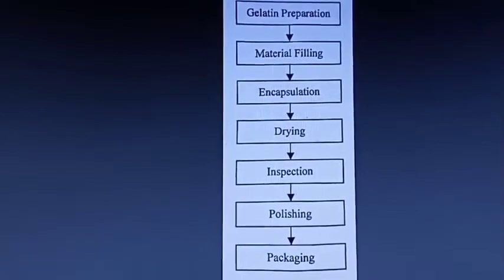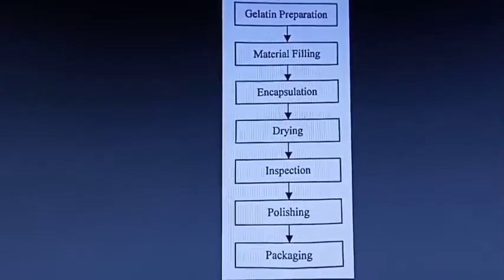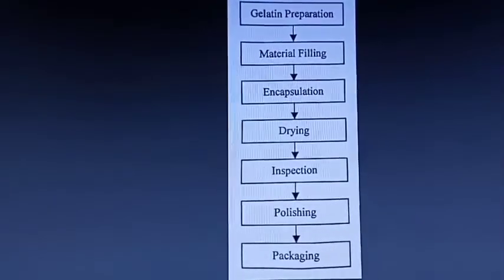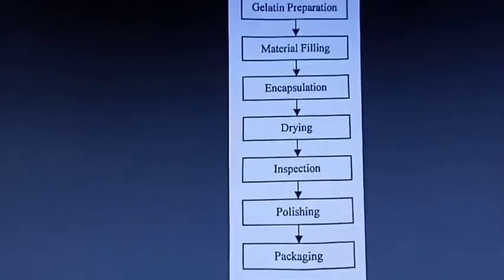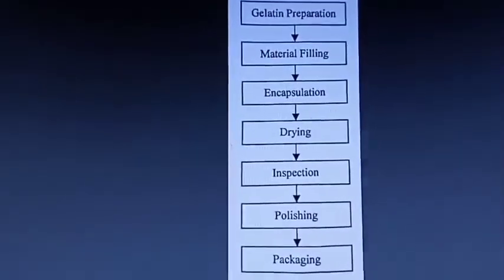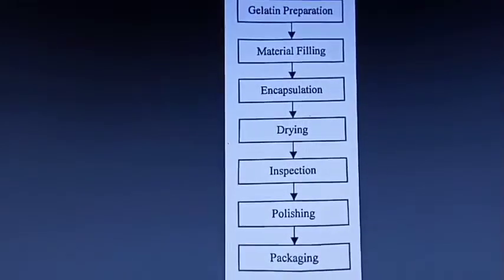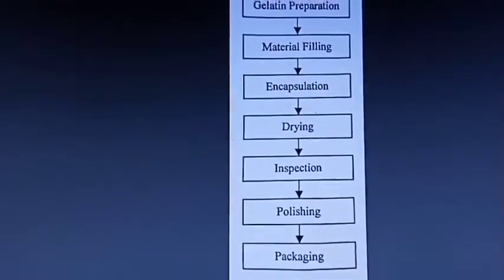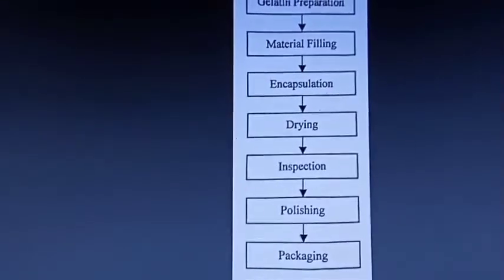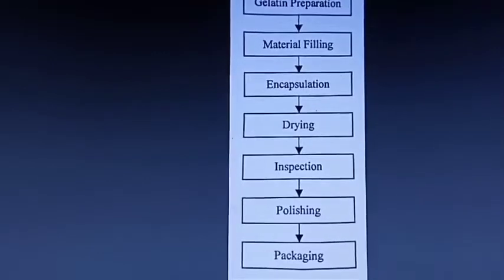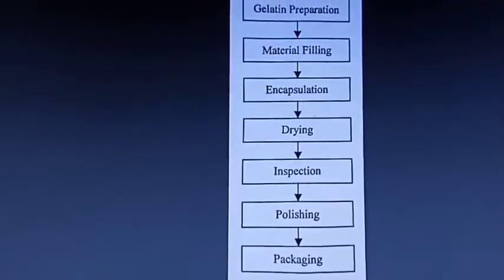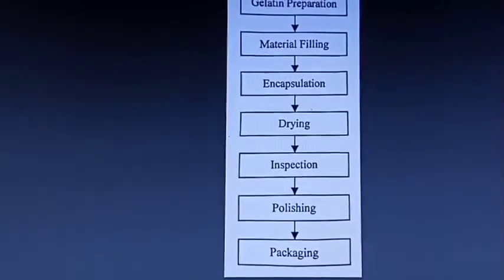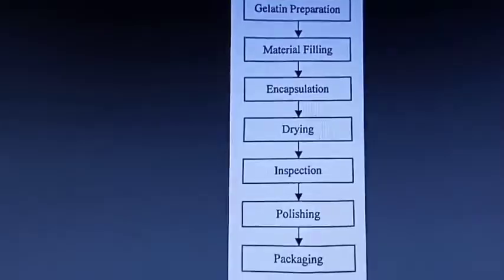Here is the whole preparation process of soft gelatin capsules. It includes: gelatin preparation, then material filling, then encapsulation, then drying, inspection, polishing, and finally packaging.